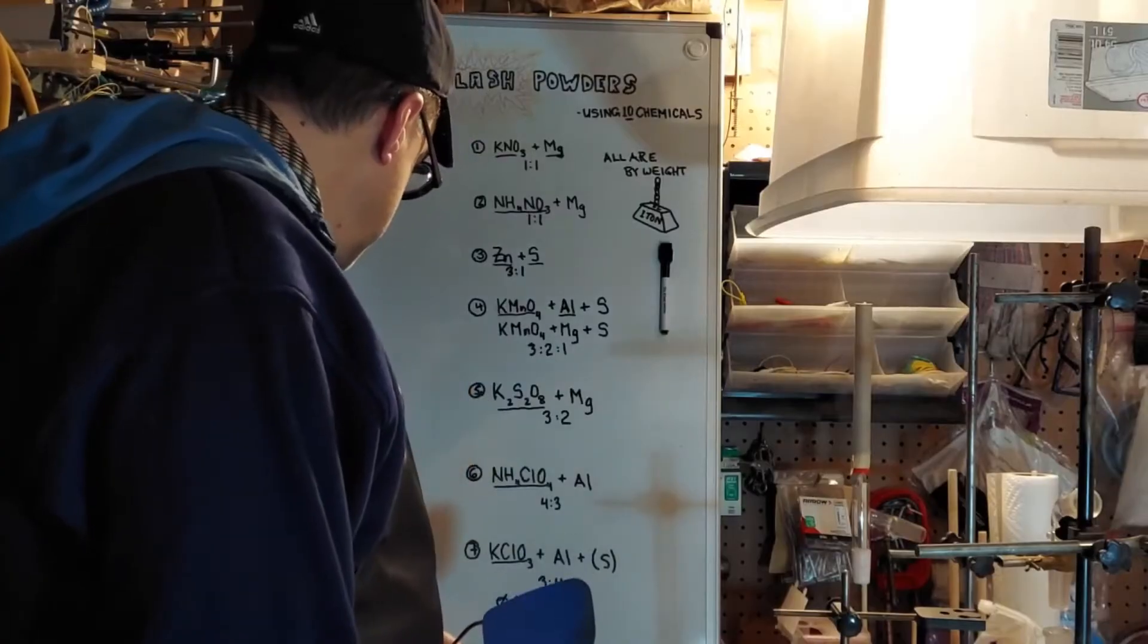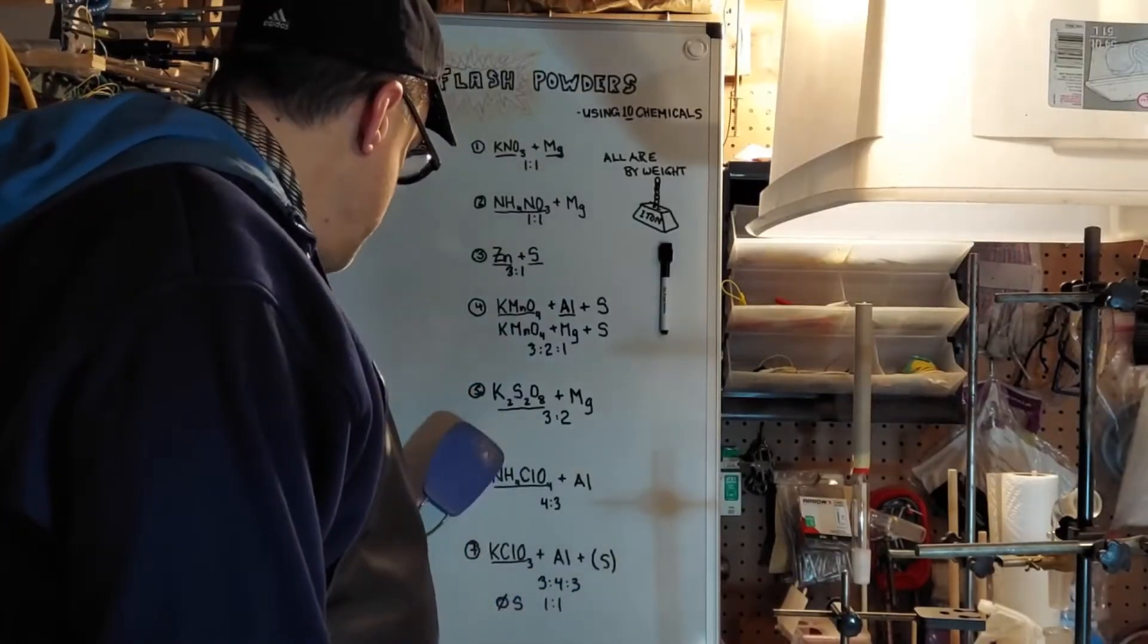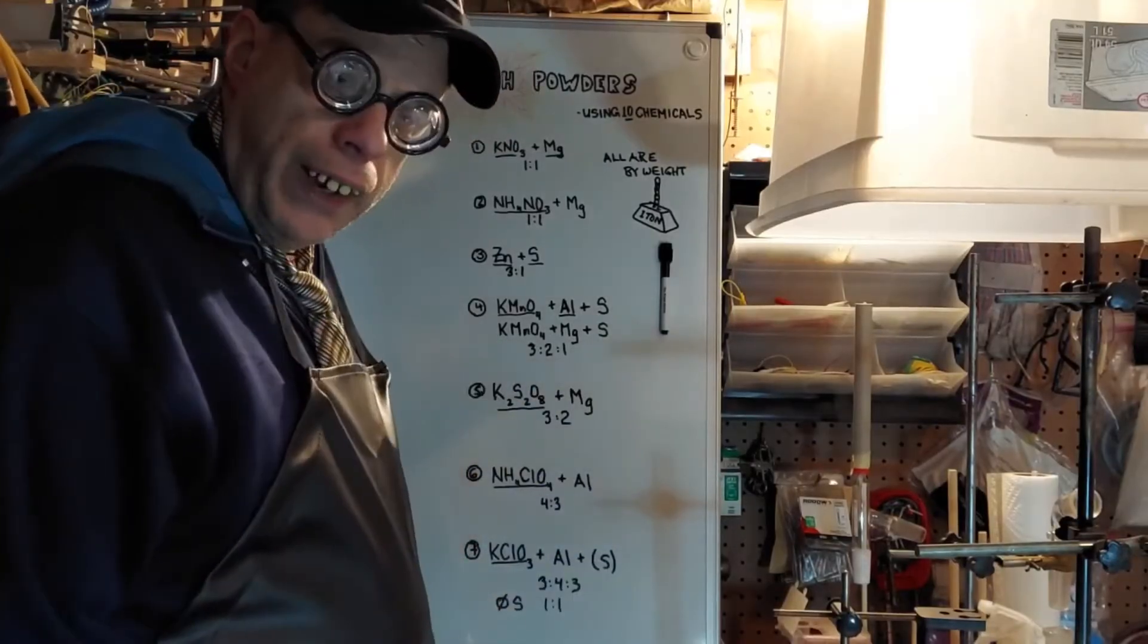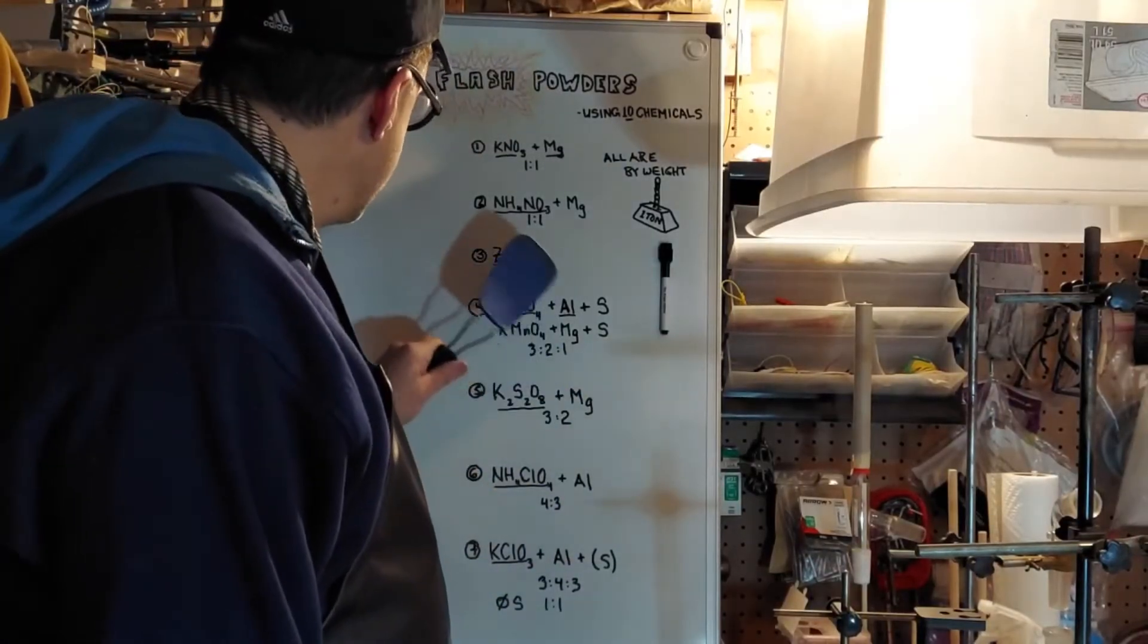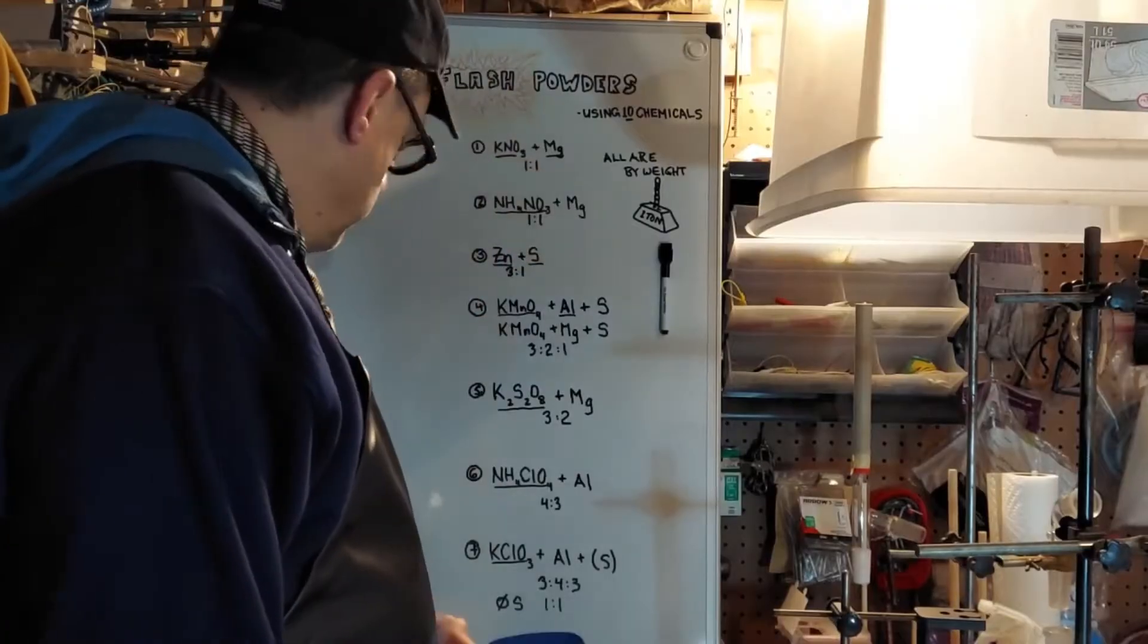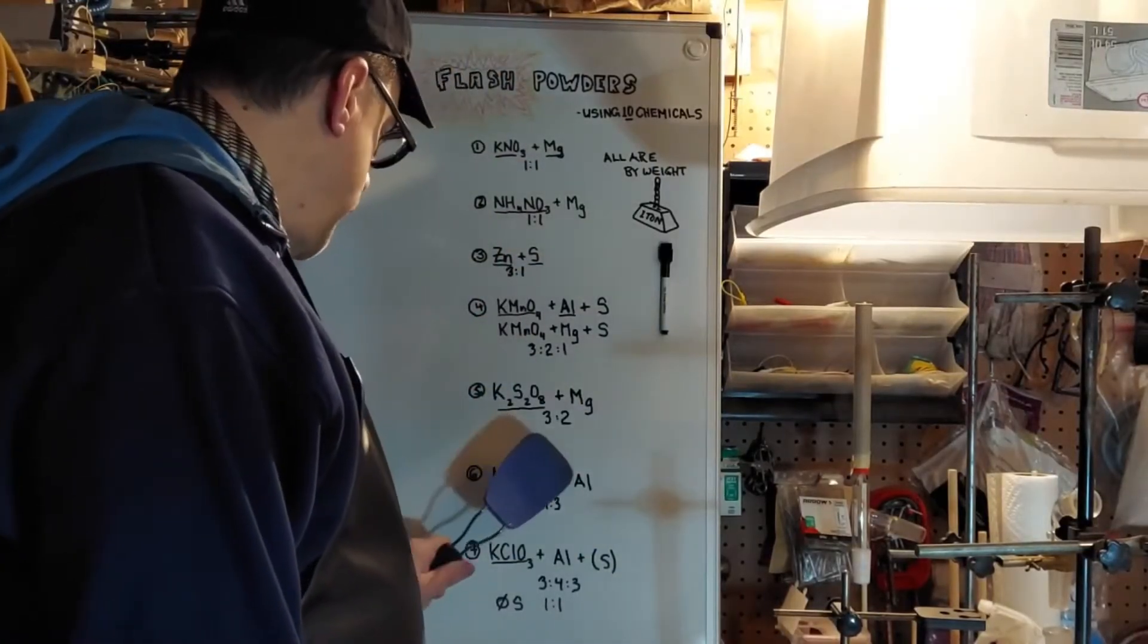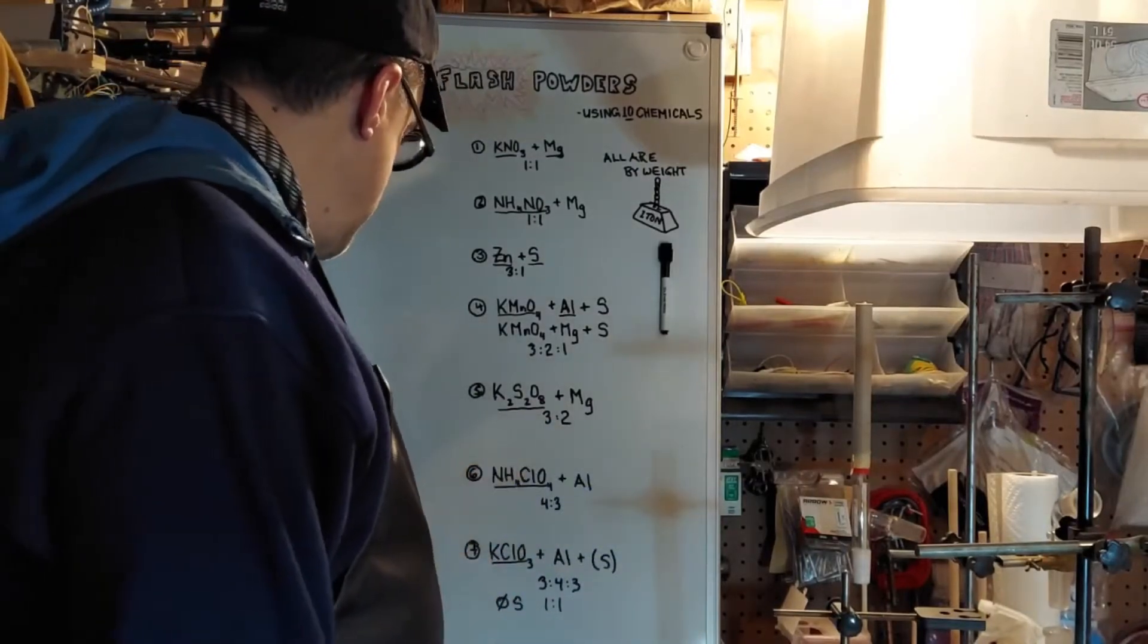Number six, we got ammonium per chlorate and aluminum. Now you know this kind of trend here, it's either aluminum or magnesium all the way up except for this one. Those are very common. Ammonium per chlorate and aluminum, and you want that in a four to three ratio.